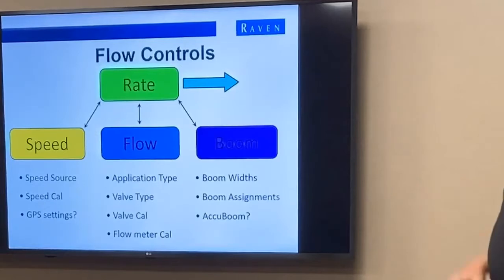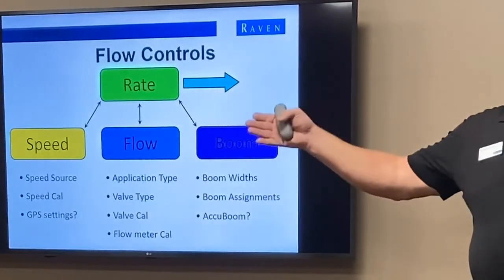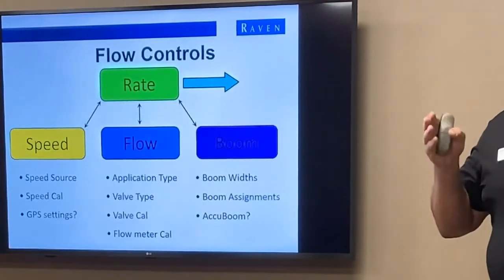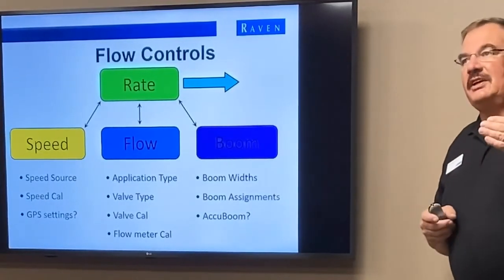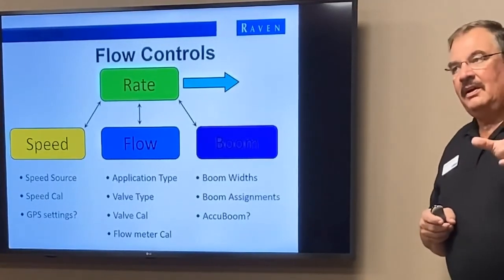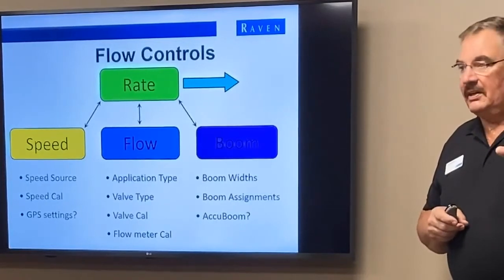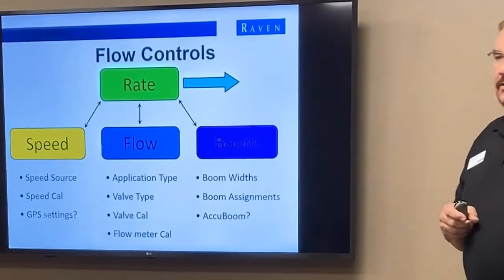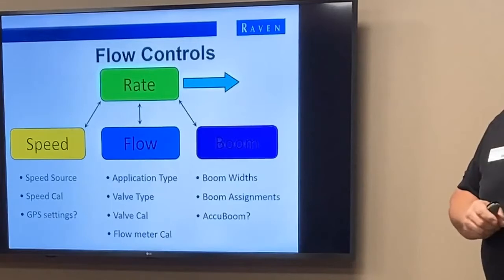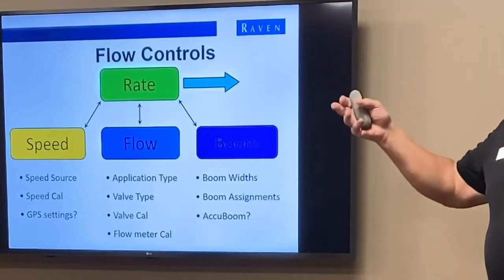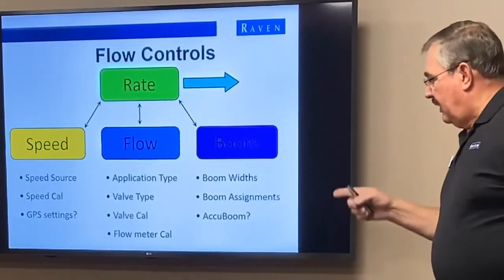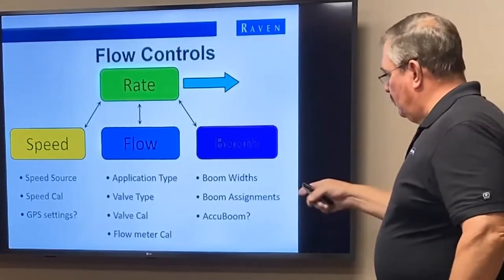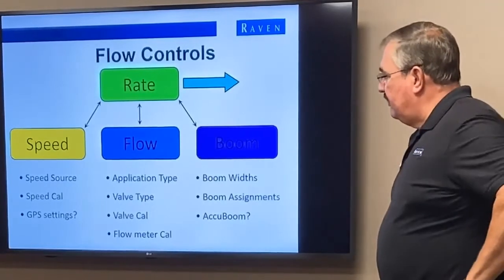Finally, we have to know how wide your boom is — the total width — and if we have sections, how wide each section is. When you're shutting off sections at a time, the controller will compensate. It compensates not only for driving slower, but also for how many boom sections are on. Those are all things we have to look at, and that includes automatic boom control as well.